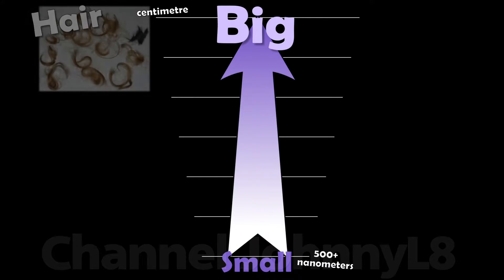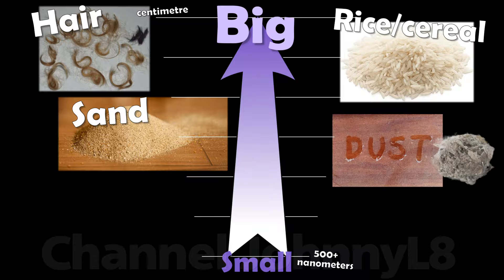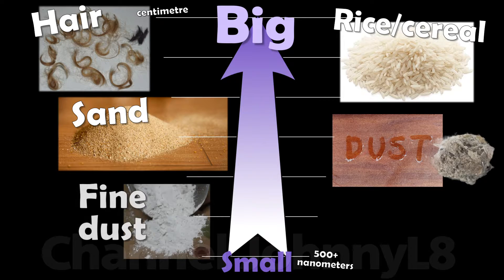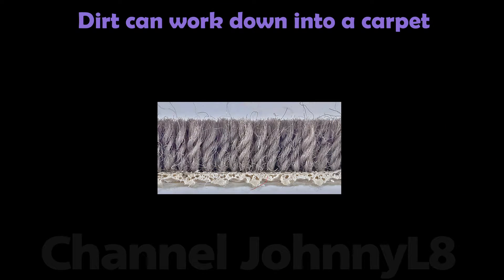Dirt and dust particles come in all different shapes and sizes, from hairs at the larger scale to microscopic bacteria at the smallest scale. So a vacuum cleaner has to cope with extracting particles that range from centimetre-sized to sub-micrometre sized. Most dirt, particularly the larger kind, that lands on a carpet initially sits on the surface region.